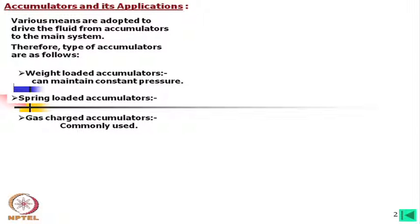Gas-charged accumulators are commonly used. Weight-loaded accumulators may be the best in terms of constant pressure, but for high pressure you have to use a huge amount of load and the construction of such an accumulator is difficult. Gas-loaded is best because in some cases you can regulate the gas pressure from the outside, although it is not normally done.